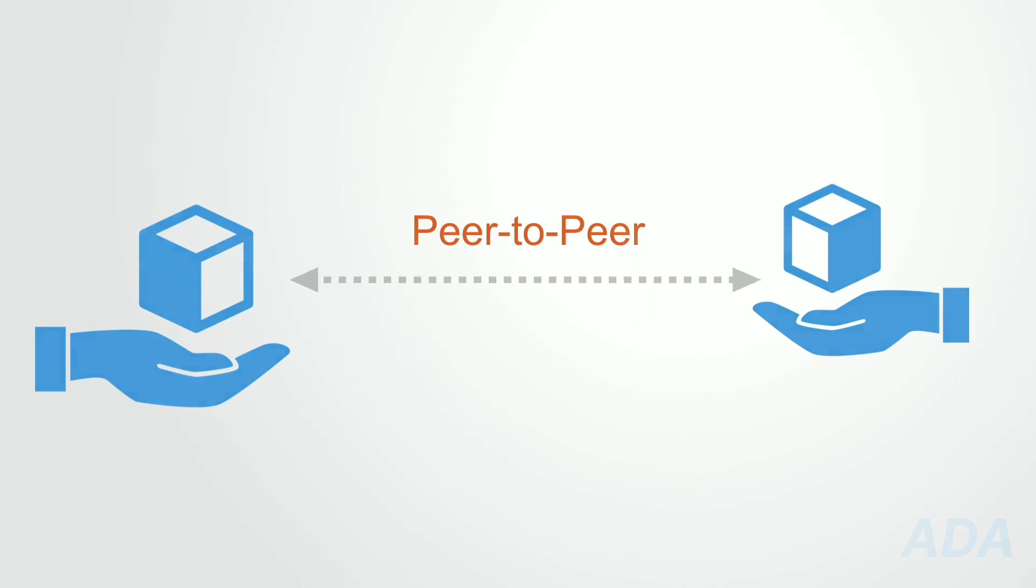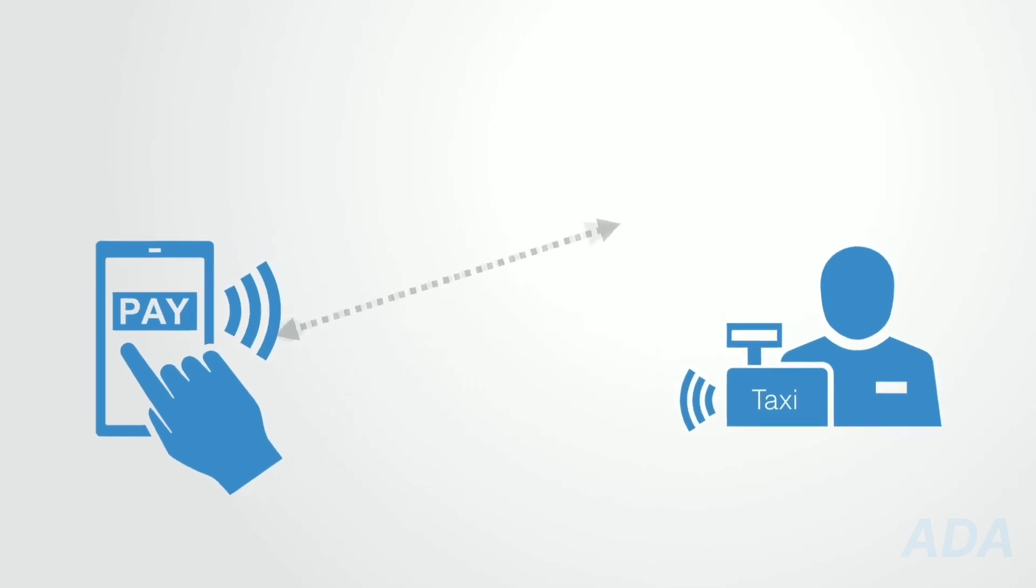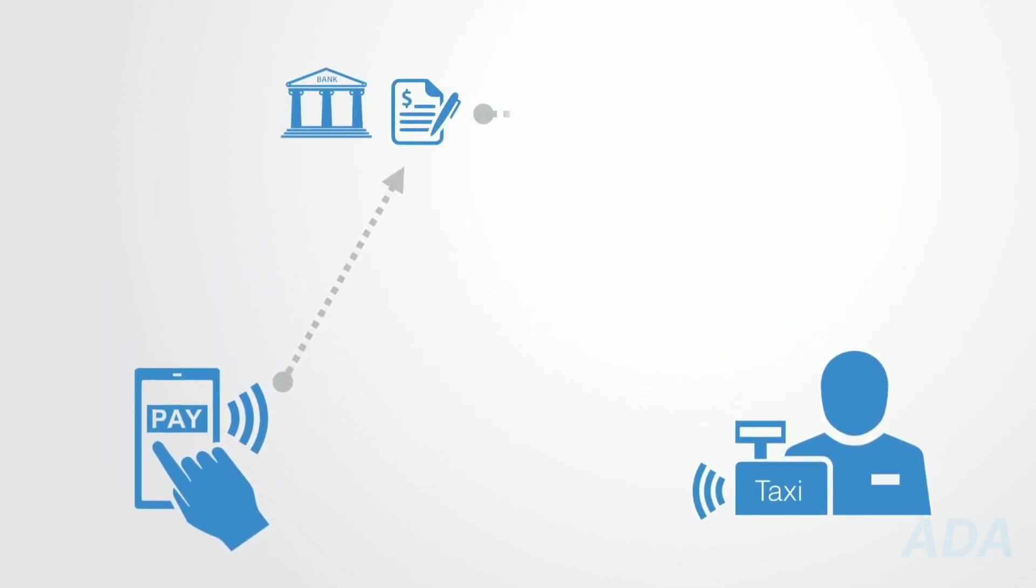With the existing traditional system, when you pay for a ride in the taxi with a credit card, it looks like you're paying the driver directly, when in fact, what is happening is that a database record belonging to my bank is being debited and a database belonging to the bank of the company that the driver works for is being credited.